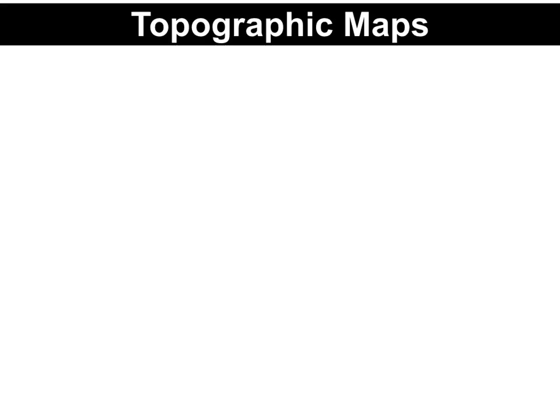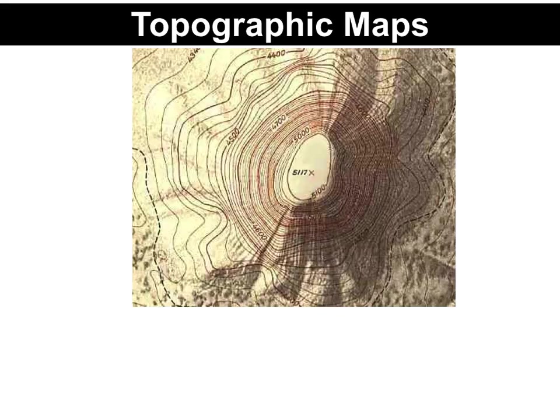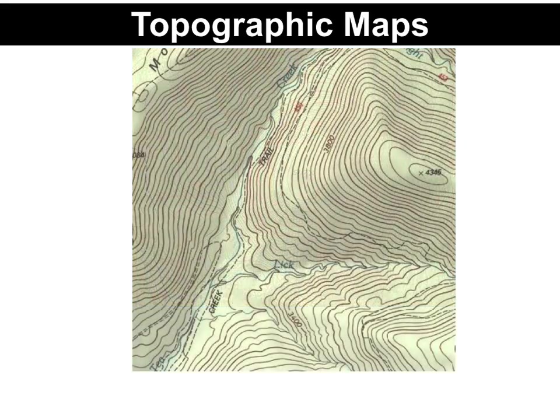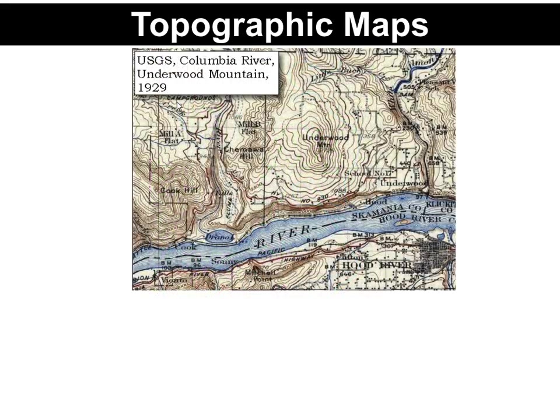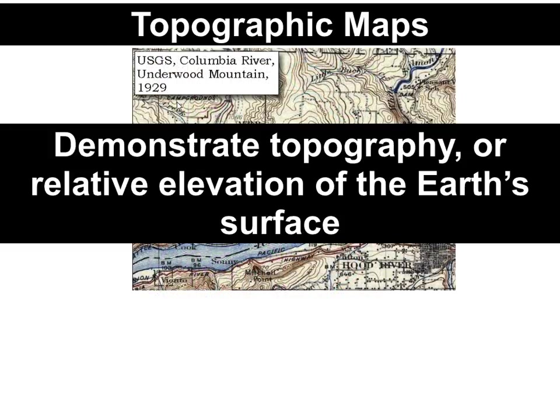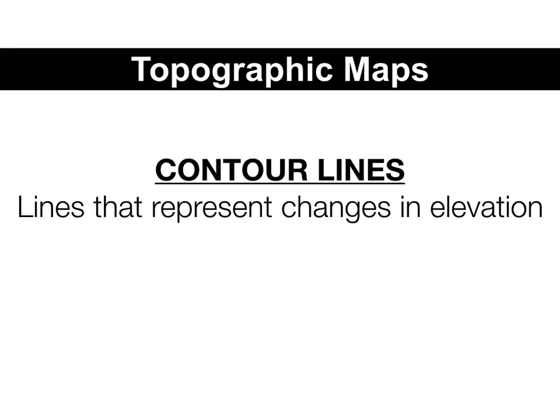One of the different types of maps we'll be looking at this year are called topographic maps. A topographic map is a map with a lot of little lines on it. Those lines are called contour lines, and they represent different levels of elevation — or topography, the relative elevation of the Earth's surface.